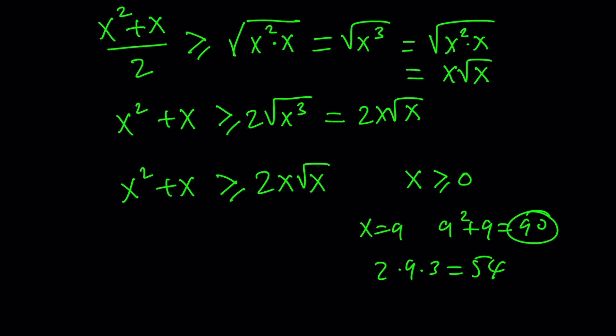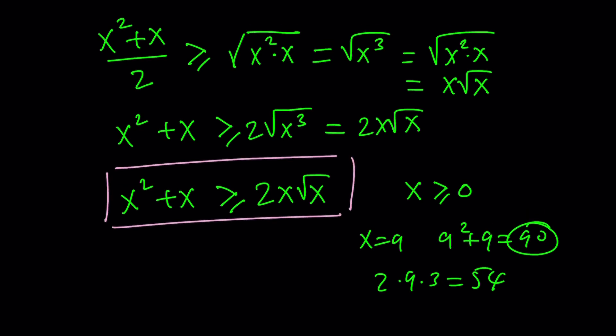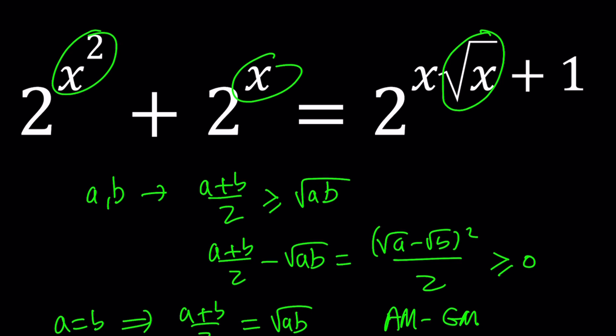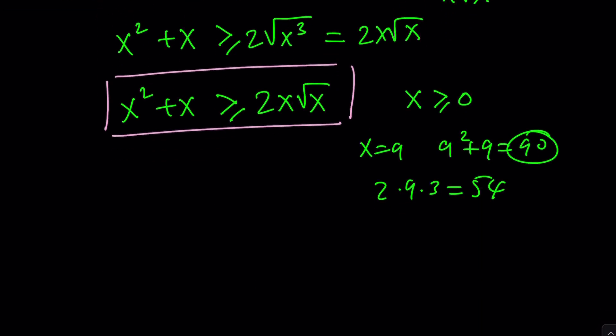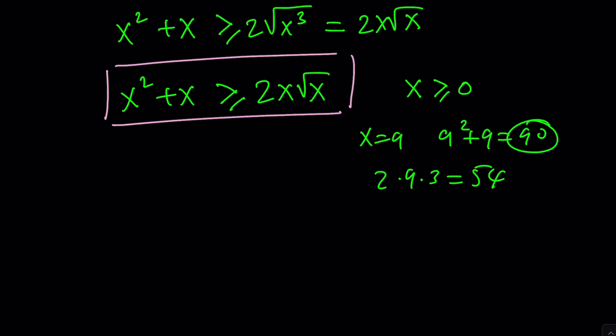So far, this is what we have, but notice that we have 2 to the power of something. So we have an exponential equation. How do we go from this to the exponentials? Easy. We're going to raise 2 to the power of both sides. These are going to be the exponents. So if this is true, then isn't it true that 2 to the power of X squared plus X is greater than or equal to 2 to the power of 2X square root of X?